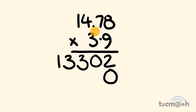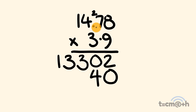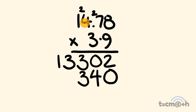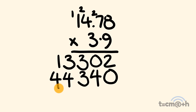We put a 0 down and start the next line. 3 times 8 is equal to 24 — put the 4 down there and carry the 2. 3 times 7 is equal to 21, plus 2 is equal to 23 — put the 3 there and carry the 2. 3 times 4 is equal to 12, plus 2 is equal to 14 — put the 4 there and carry the 1. And finally 1 times 3 is equal to 3, plus 1 is equal to 4.